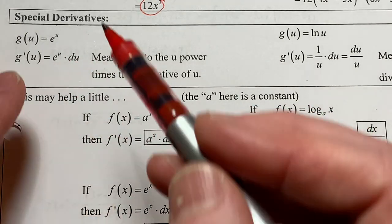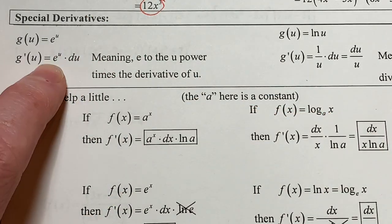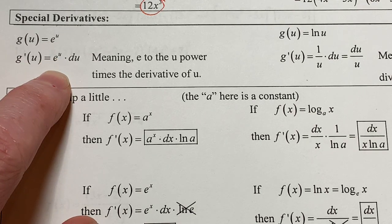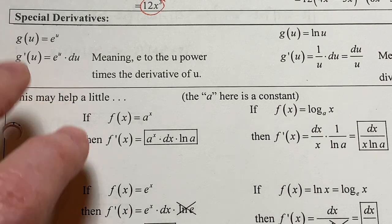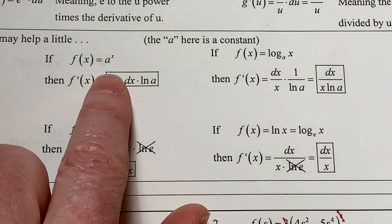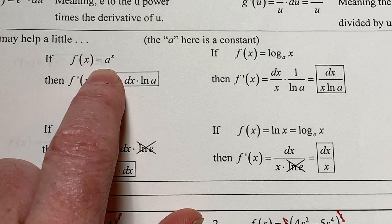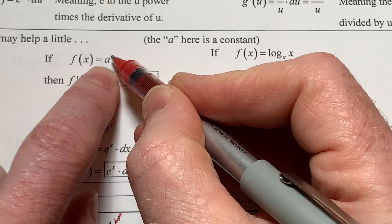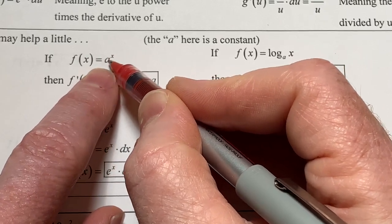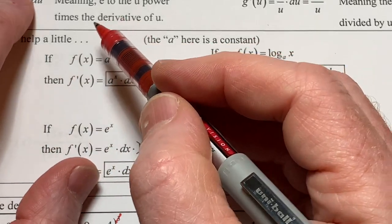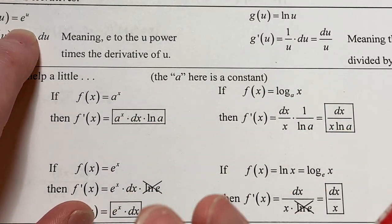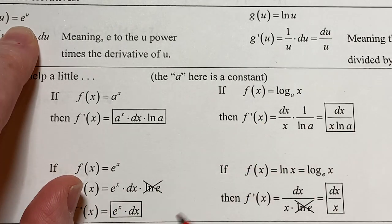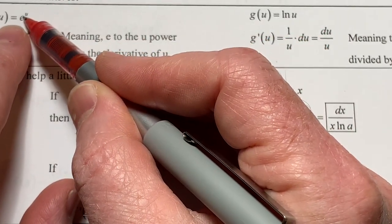For exponential functions base e, that's all AP Calc will ask you about. But in regular college calculus you might see f of x equals a to the x, where the base a could be anything — two, five, seven — whereas e has a fixed value of approximately 2.718. The only difference in the rule: for e to the x you copy it down and multiply by the derivative of the exponent. For a to the x, you do the same but then also multiply by ln of a.